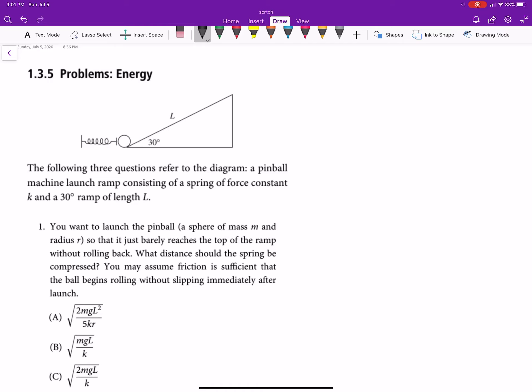So, part one says you want to launch the pinball, a sphere of mass m and radius r, so that it just barely reaches the top, right there. Barely reaches the top of the ramp without rolling back. What distance should the spring be compressed? You may assume friction is sufficient that the ball begins rolling without slipping immediately after launch.